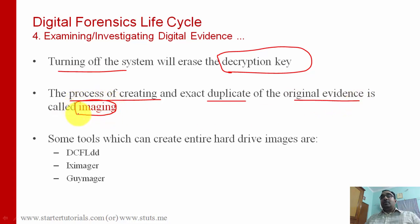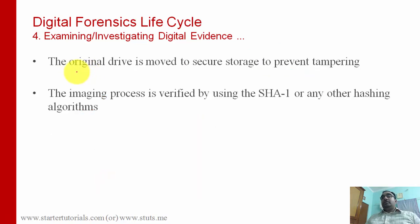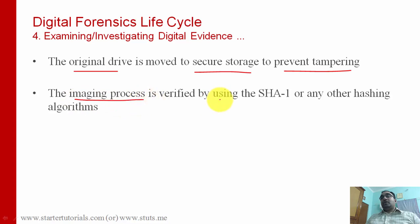Some software you can use to take images of a hard disk are DCFLDD, IX Imager, and Guy Major. After taking the copy, the original hard disk can be moved to secure storage to prevent tampering. The imaging process can also be verified using hashing — SHA1 is one hashing algorithm, and there are others like MD5, SHA2, and others. You can use any algorithm for generating the hash and later verify if it has been modified.